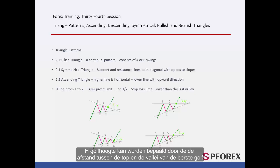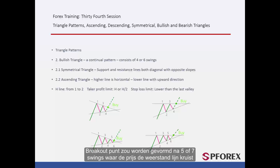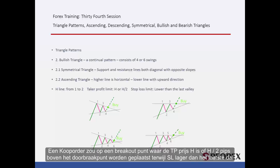H, the wave height, can be determined by calculating the distance between the peak and valley of the first wave — the swing between number 1 and 2. The breakout point forms after 5 or 7 swings, where price crosses the resistance line. A buy order is placed on the breakout point, where the TP price is H or H/2 pips higher than the breakout point, while the SL is lower than the last valley.